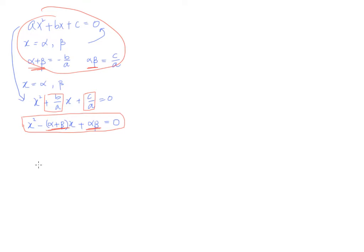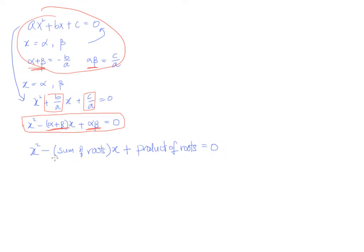We can think of it almost like a formula: the equation of any quadratic equation is always given by X² minus (sum of roots)·X plus (product of roots) = 0. All we need is the sum of roots alpha plus beta and the product of roots alpha times beta. Now let's take a look at one example that requires the use of this knowledge.